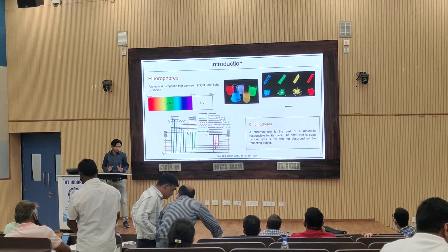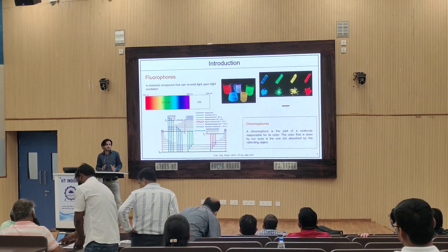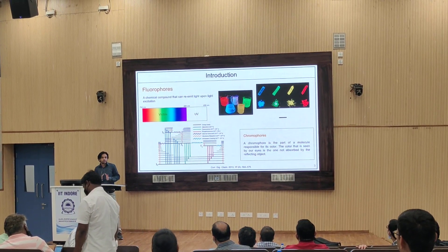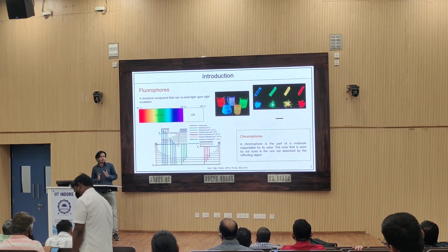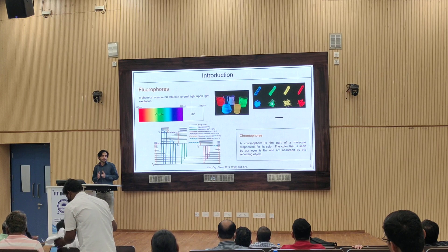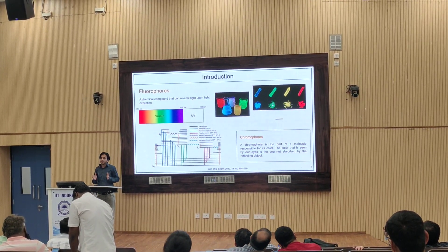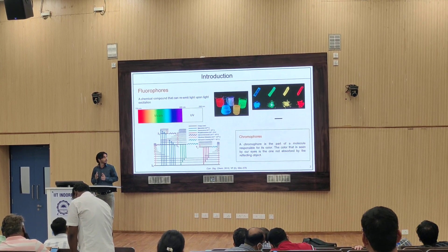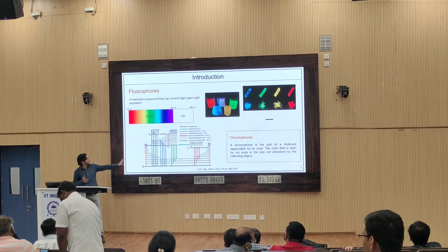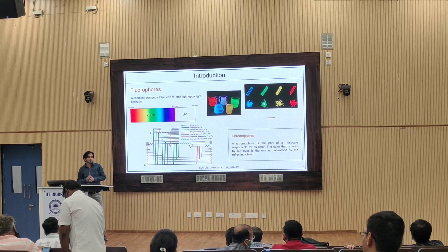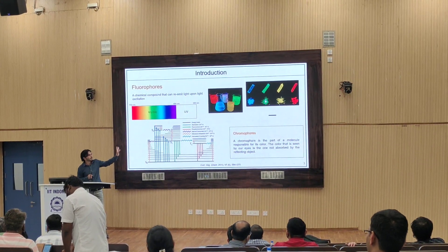In the introduction, any chemical compound that can emit light upon light excitation is called a fluorophore. These fluorophores might be emissive both in the solution state as well as in the solid state. Some fluorophores show selectivity — they may be emissive in solution but show no emission in the solid state. This selectivity depends upon how molecules utilize their excited state energy in different mediums. Fluorophores absorb energy in the UV region and emit light in the visible range.